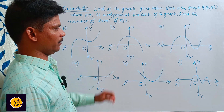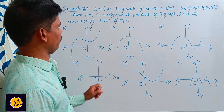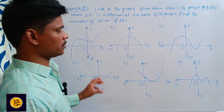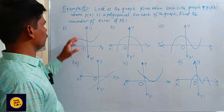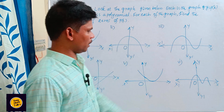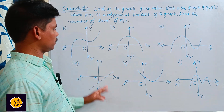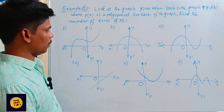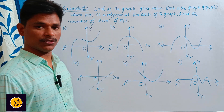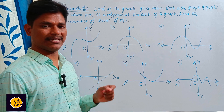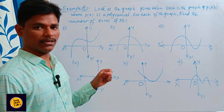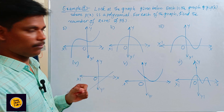Some polynomial graphs are given. Look at the graph given below. Here the graph is y equals p of x, where p of x is the polynomial. For each of the graphs, you have to find out the number of zeros. To find the number of zeros, the graph which intersects the x-axis — the number of intersection points equals the number of zeros. We will see one by one. Six graphs are given.